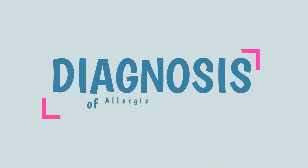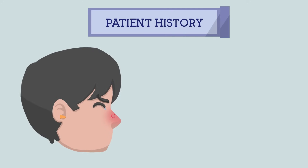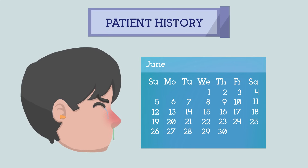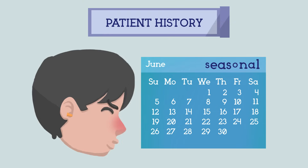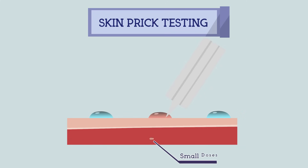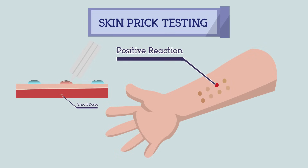For diagnosis of allergic rhinitis: 1. Patient history. Usually, the person complains of all the symptoms mentioned above, and if the timing of these symptoms is specific and seasonal, then we can easily reach a diagnosis of seasonal allergic rhinitis. 2. Skin prick testing. In this test, an allergen is introduced using a skin prick and the body's reaction is observed to confirm allergy to a particular allergen.